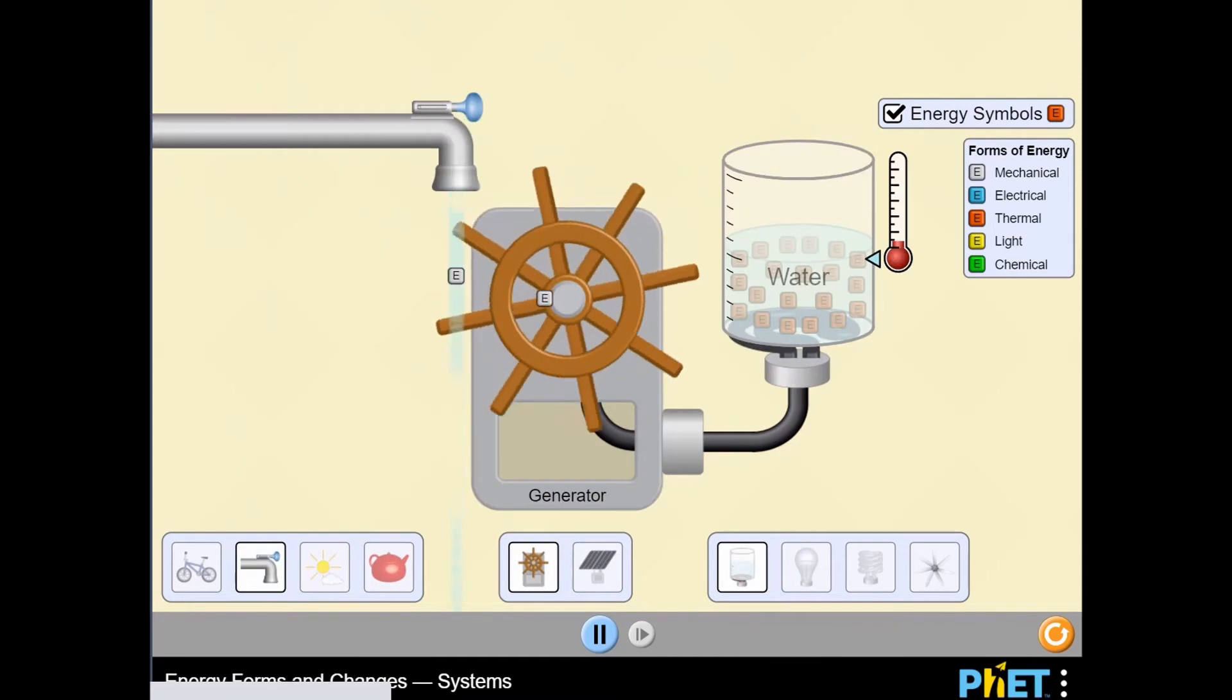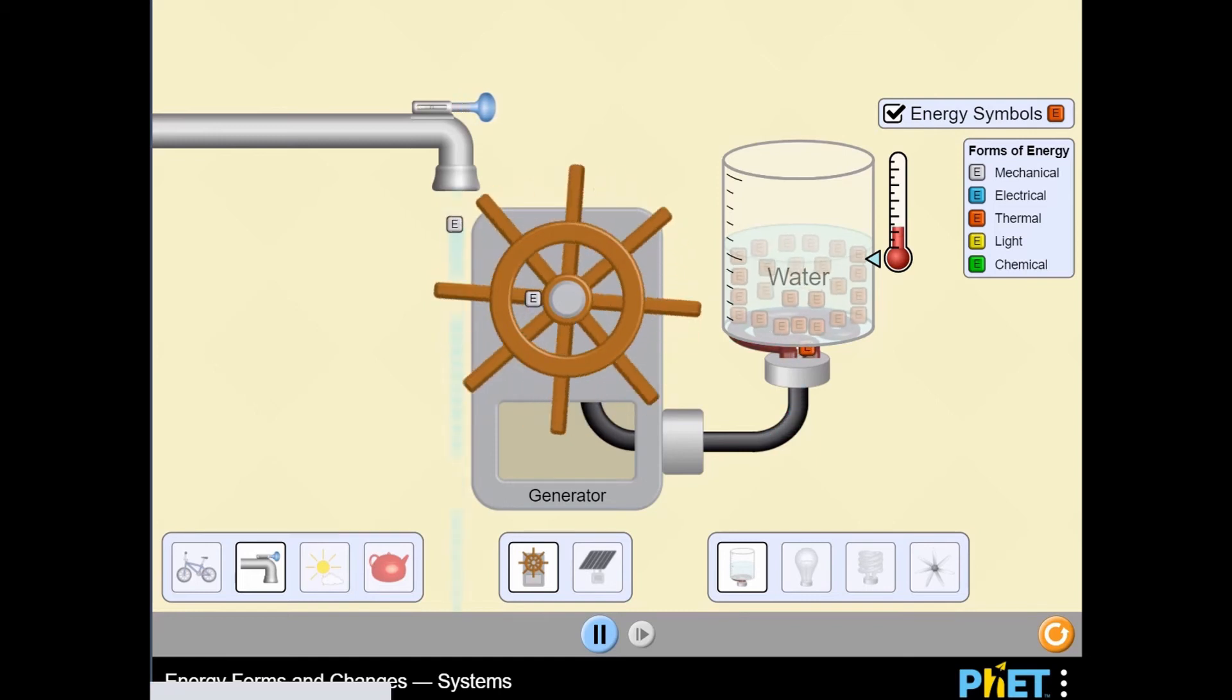Use the different buttons to select what energy source will be used to create energy, and then choose how that energy will be used to produce a desired outcome, from powering a lightbulb, boiling water, or powering a fan.